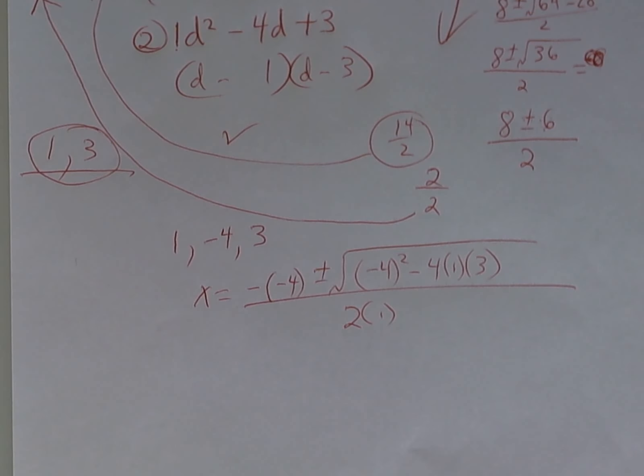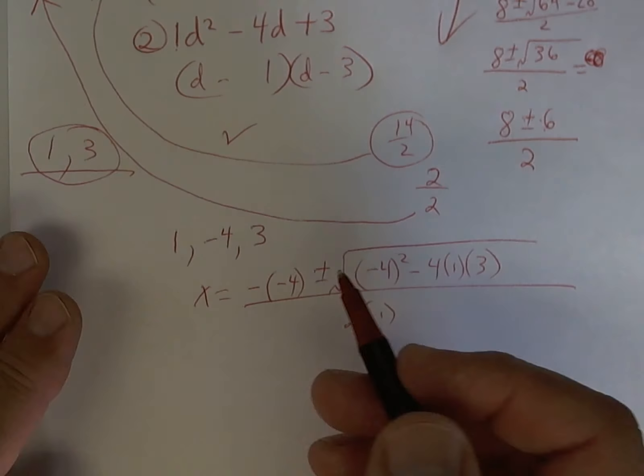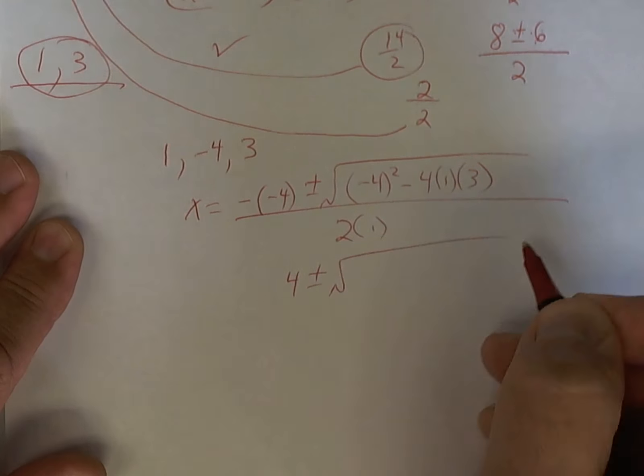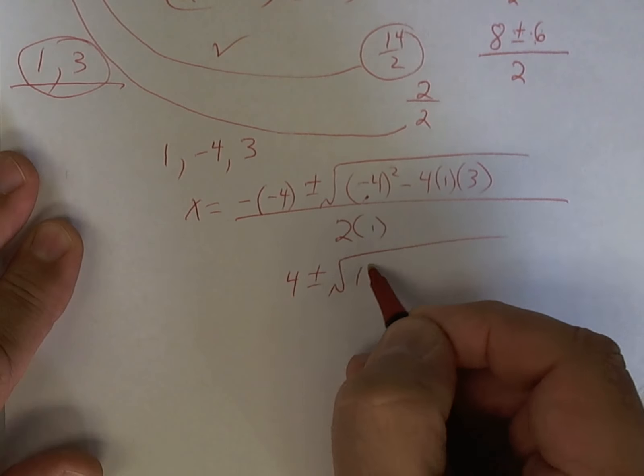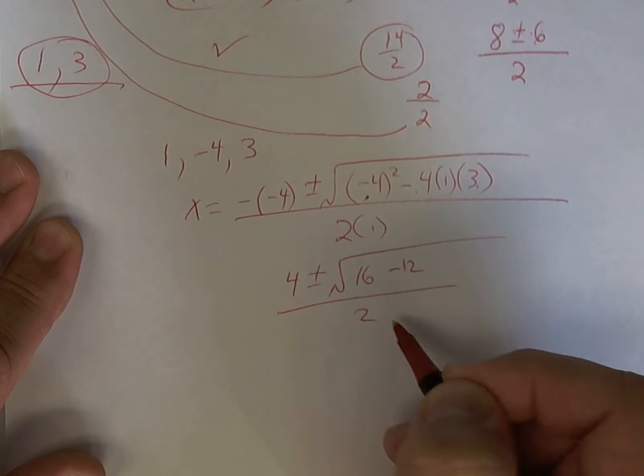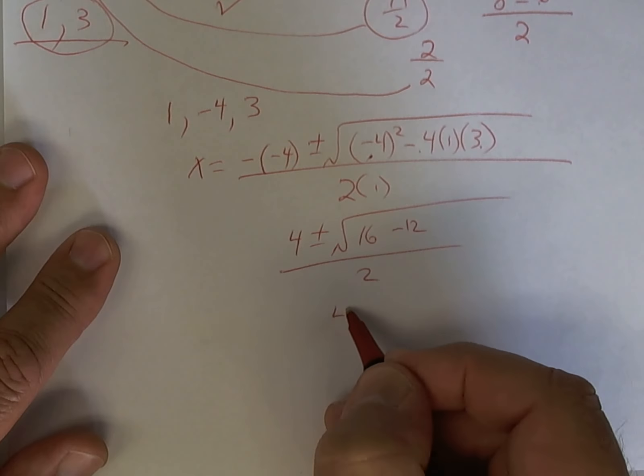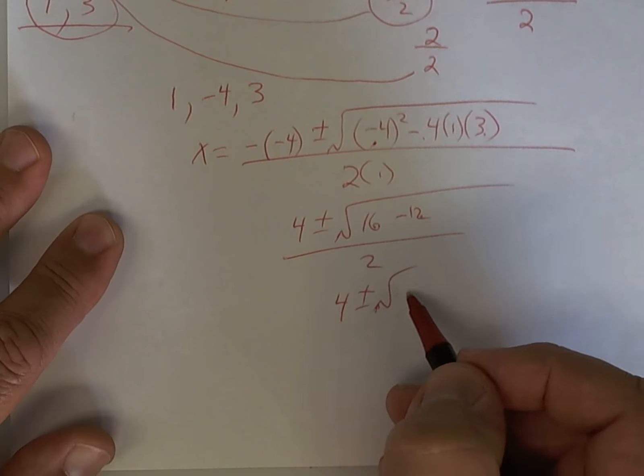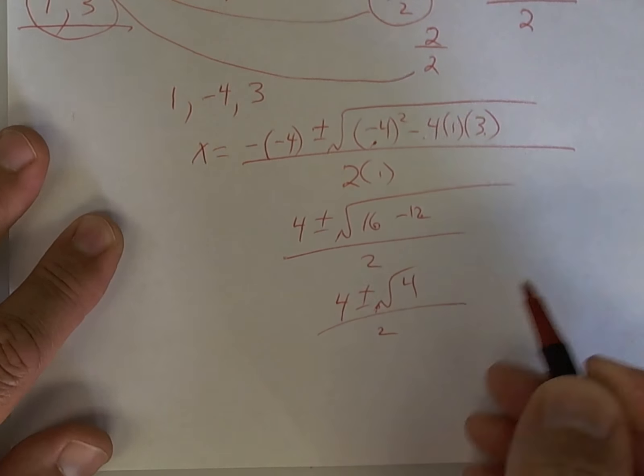All right, if you're with me, a negative times a negative is going to be a positive. Negative four times negative four is sixteen minus twelve. This is four, and the square root of four is two.